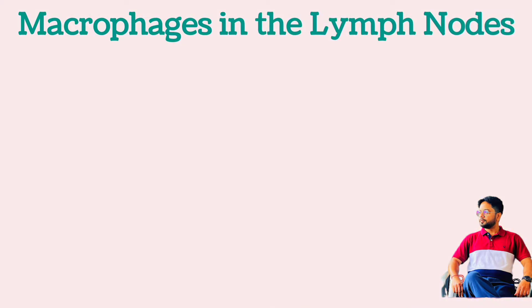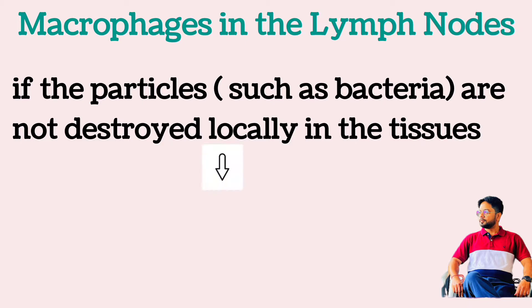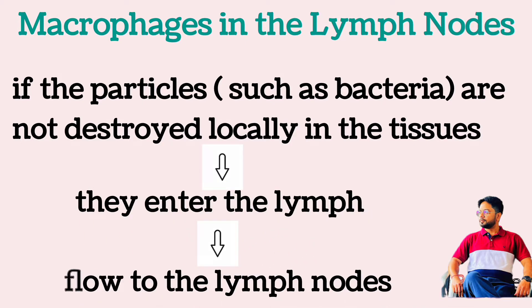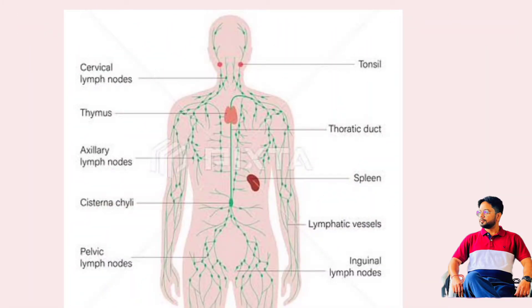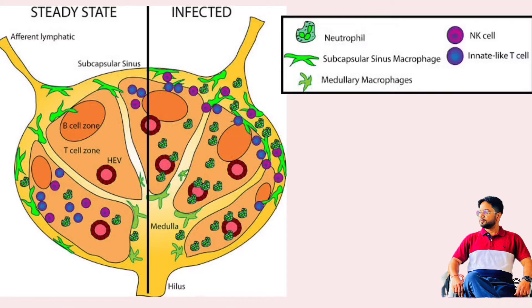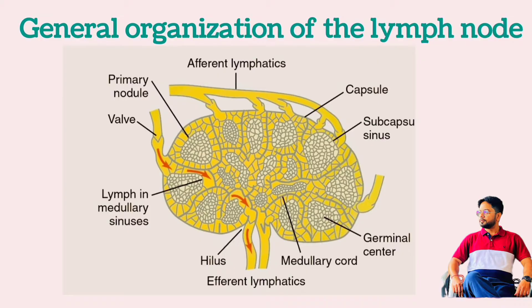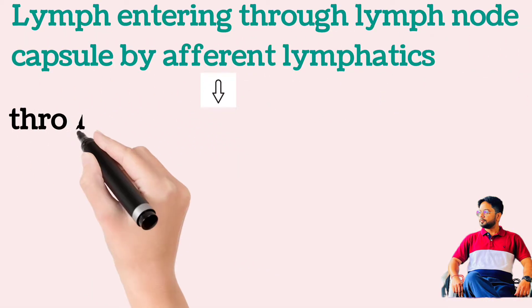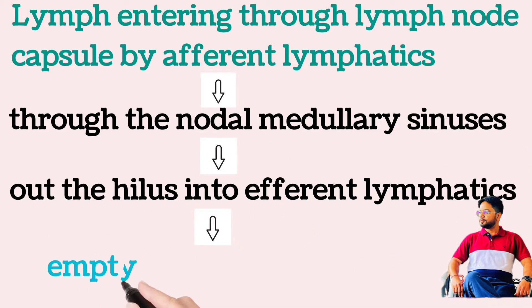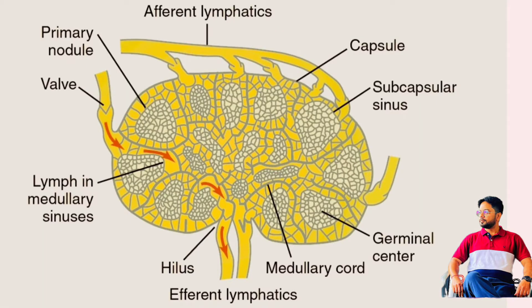Macrophages in the lymph nodes: essentially no particulate matter that enters the tissue, such as bacteria, can be absorbed directly through the capillary membrane into the blood. Instead, if the particles are not destroyed locally in the tissues, they enter the lymph and flow to the lymph nodes located intermittently along the course of lymph flow. The foreign particles are trapped in the lymph nodes in a meshwork of sinuses lined by tissue macrophages. Lymph enters the lymph node by way of afferent lymphatics, flows through the nodal medullary sinuses, and finally passes out the hilum into the efferent lymphatics, which eventually empty into venous blood. Large numbers of macrophages line the lymph sinuses, and if any particles enter the sinuses by way of lymph, the macrophages phagocytose them and prevent general dissemination throughout the body.